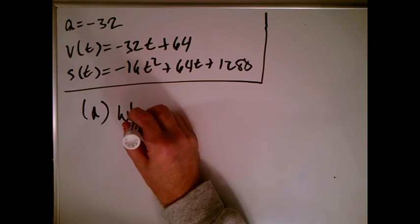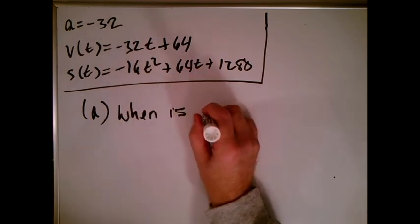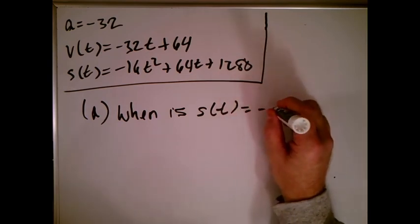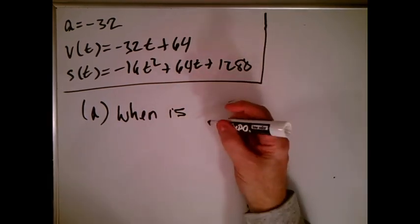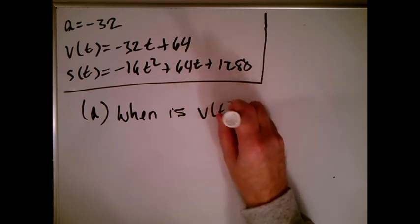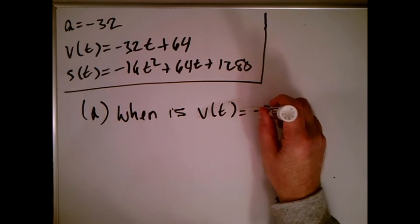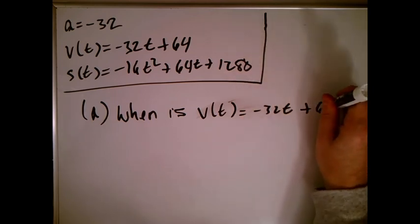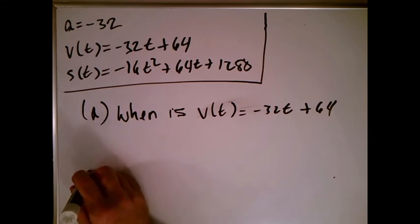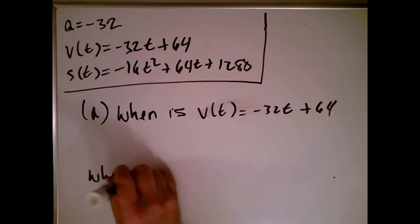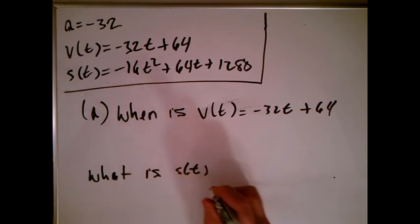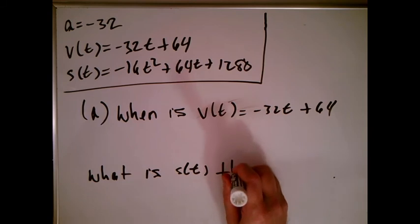So I want, when is v(t), and we'll just write down the equation, I guess, right? Nope, sorry, not s(t), I want v(t). That's minus 32t plus 64, like that. And the second part of that question is, what is s(t) at that time? What is the height? And I'm just going to put then, and we'll see what happens here.